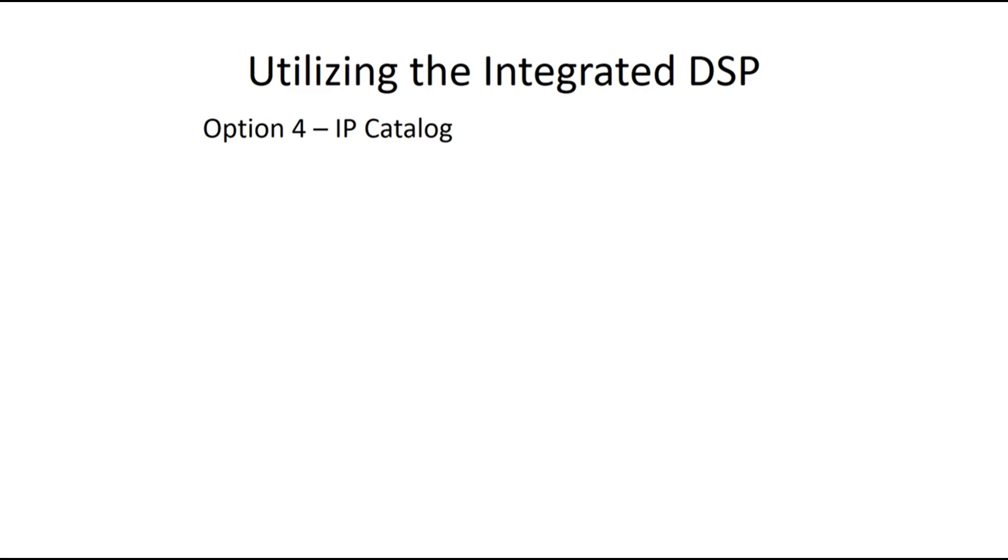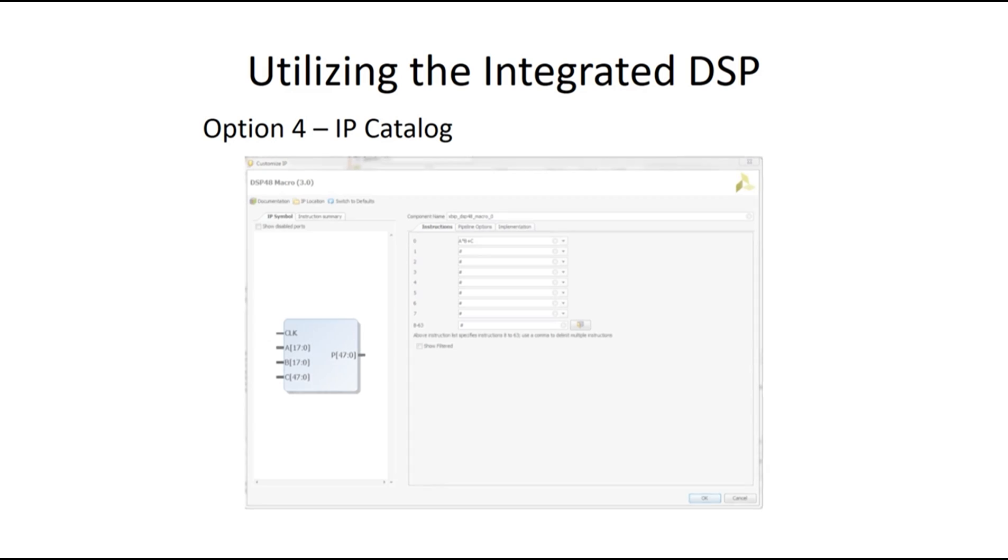And a fourth option that is available is to make use of the IP catalog within Vivado and this is basically a GUI interface that allows you to specify the operation you want to perform and it helps guide you through the process of creating a customized IP for your particular operation.